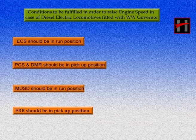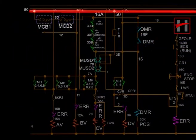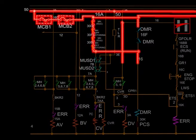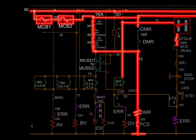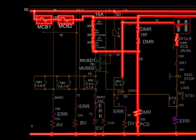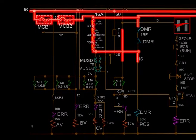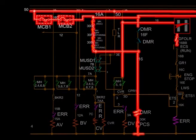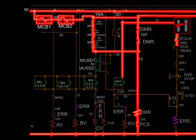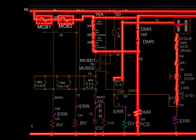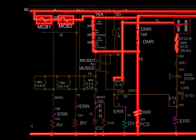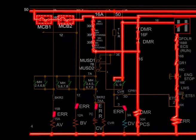The logic of current flow in the governor control engine speed circuit of diesel locomotives fitted with a Woodward governor is the same as in the case of the governor control engine speed circuit of locomotives fitted with an EDC governor. In addition, the engine run relay, or ERR, should be in picked-up position. We will now talk about the flow of current in all eight notches one by one.